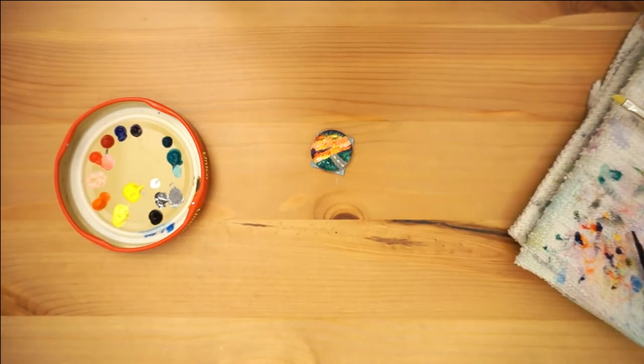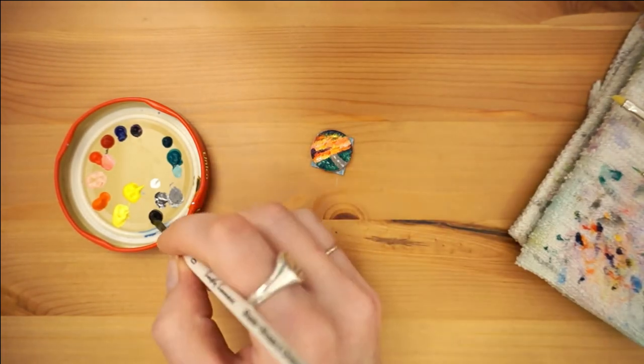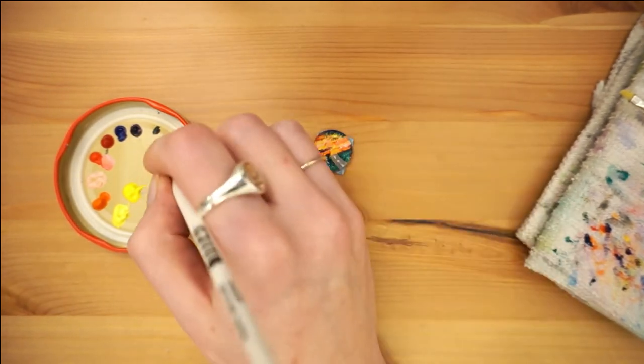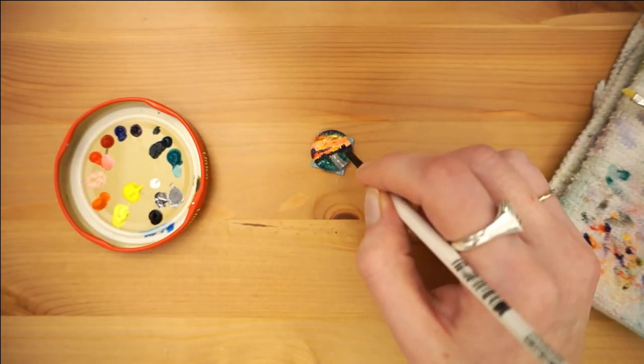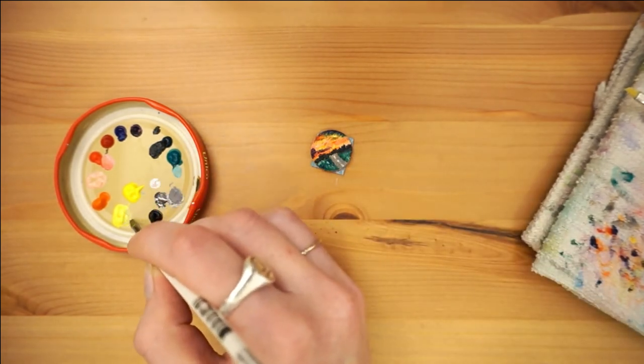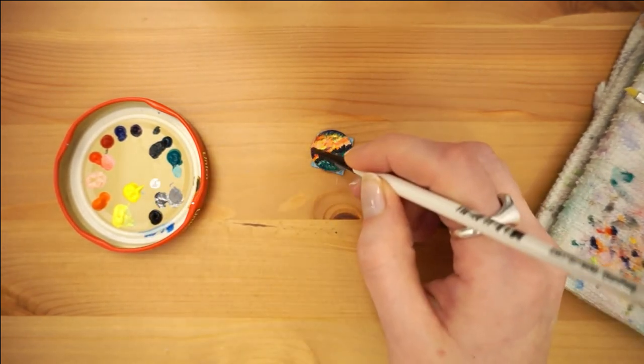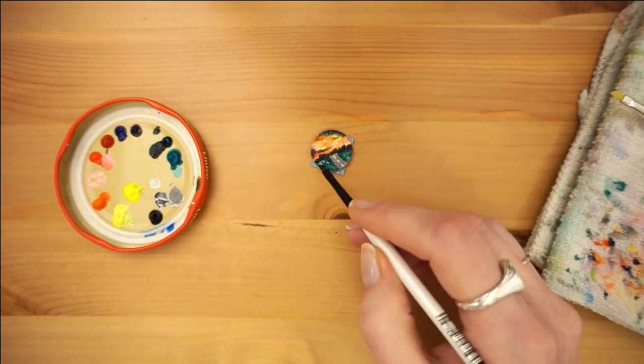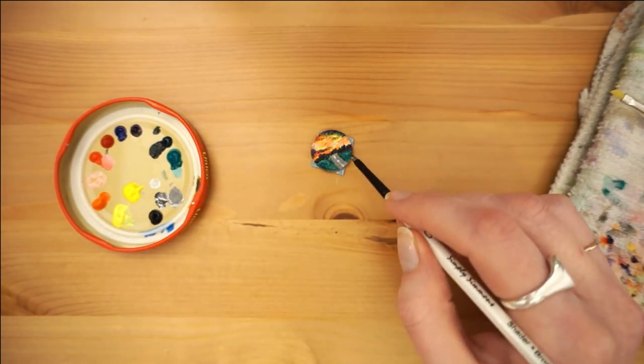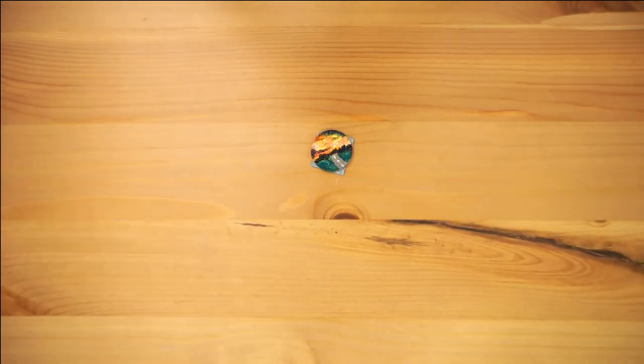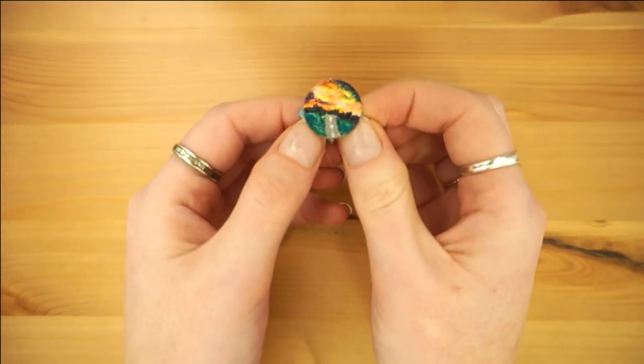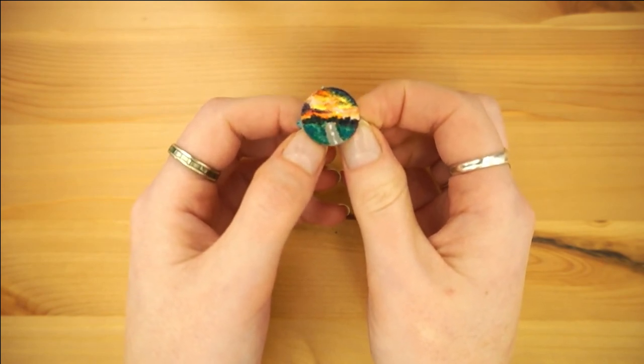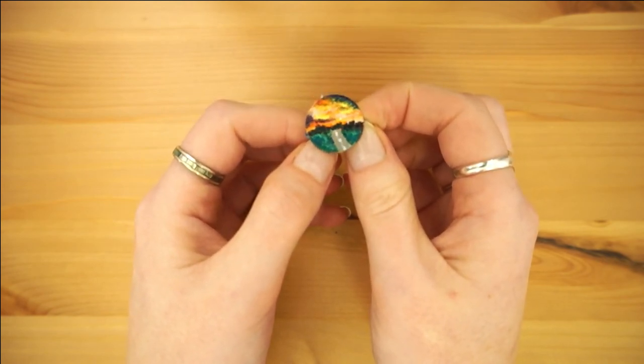My only self-critique for this one would be to work on my perspective and make the road look a little more like it's disappearing into the background, though that has to do both with my struggles with perspective and being able to paint small but clearly. What else could I paint on a penny? A sunrise? Something not sky-related? Let me know in the comments. Thank you so much for watching and we'll see you next week.